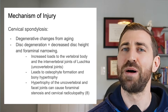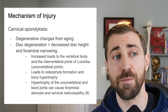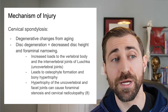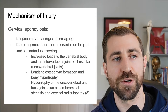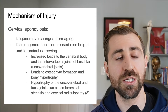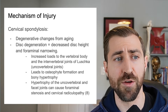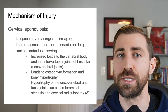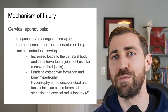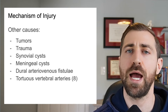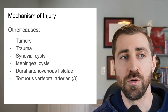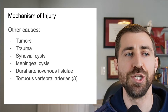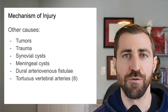Cervical spondylosis — degenerative changes from aging including decreased disc height and foraminal narrowing — increases loads to the vertebral body and intervertebral joints of Luschka, leading to osteophyte formation and bony hypertrophy. Hypertrophy of the uncovertebral and facet joints can cause foraminal stenosis and cervical radiculopathy. Degenerative changes are actually much more common than disc herniations as a cause. Cervical radiculopathy can also result from a tumor, trauma such as whiplash or a car accident or a fall, synovial cysts, meningeal cysts, dural arteriovenous fistulae, and tortuous vertebral arteries. When a patient comes through the door, rule out medical red flags first; if there are none, initiate treatment, and if they're not improving over time, send them back to the physician for imaging.